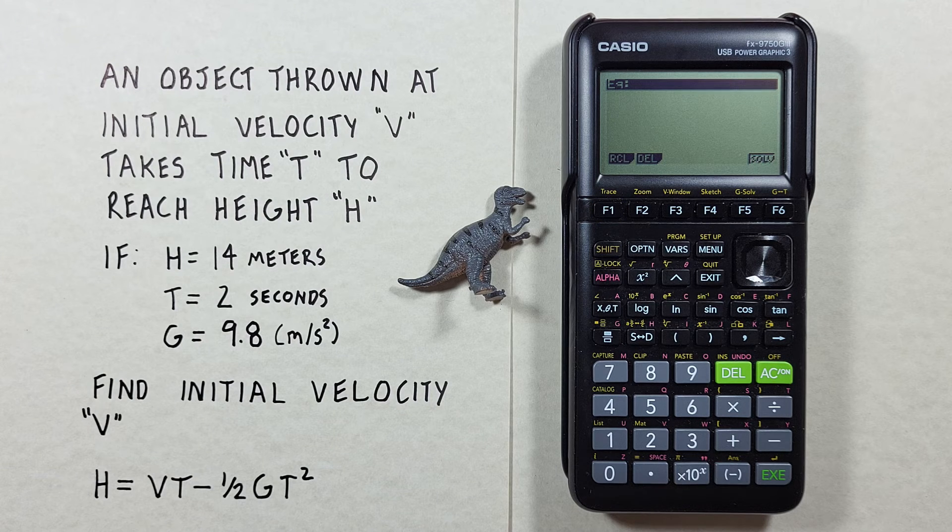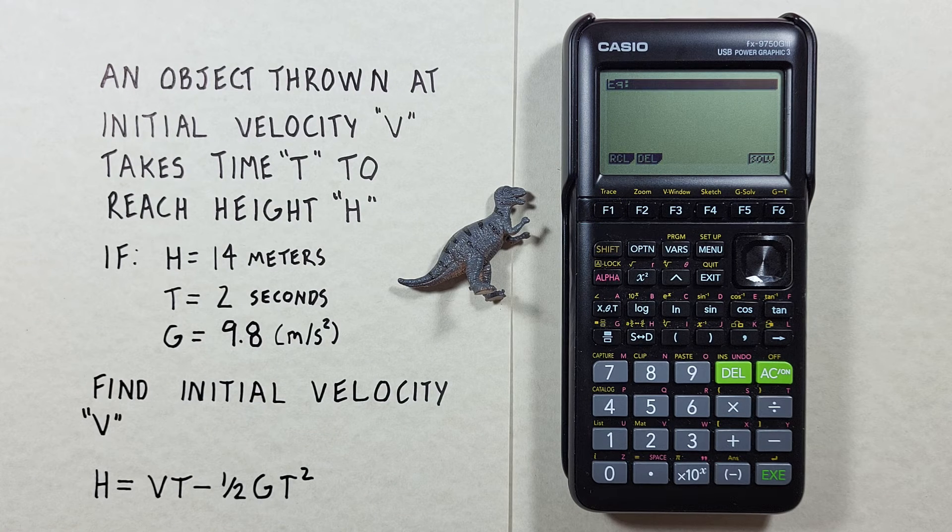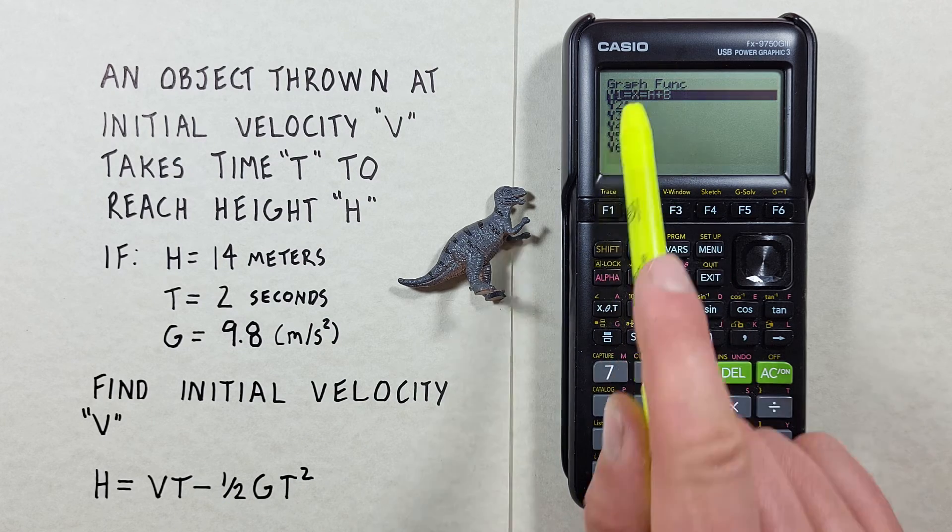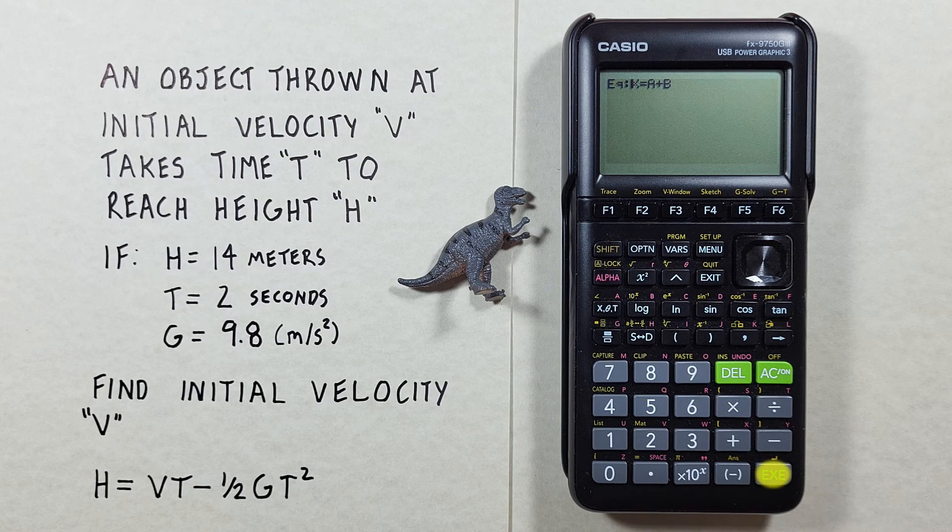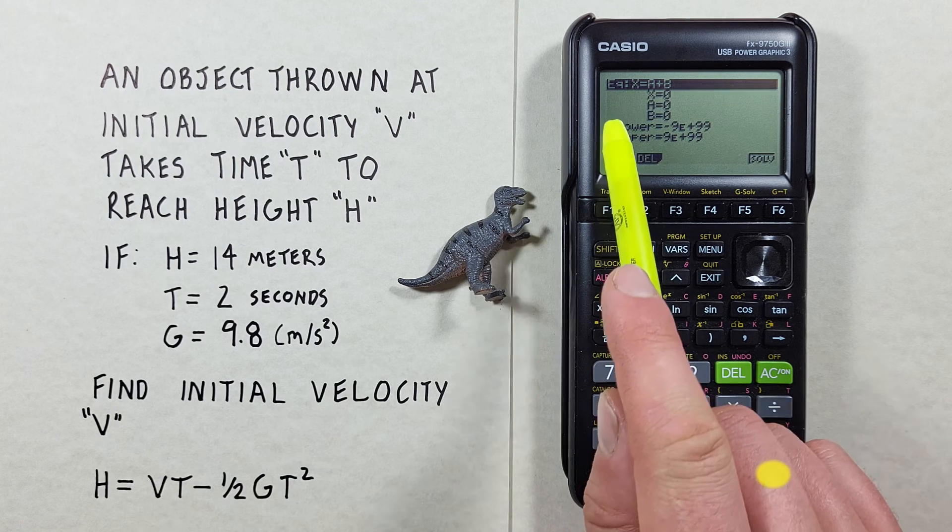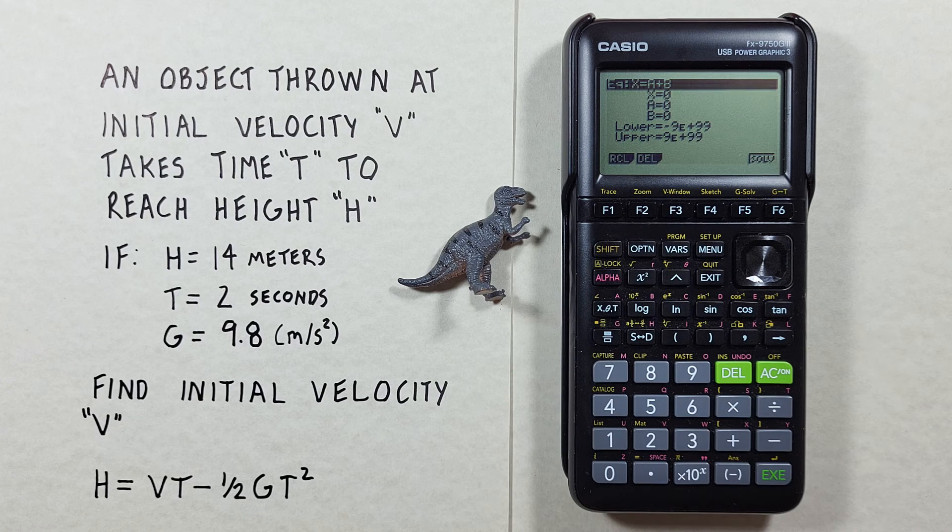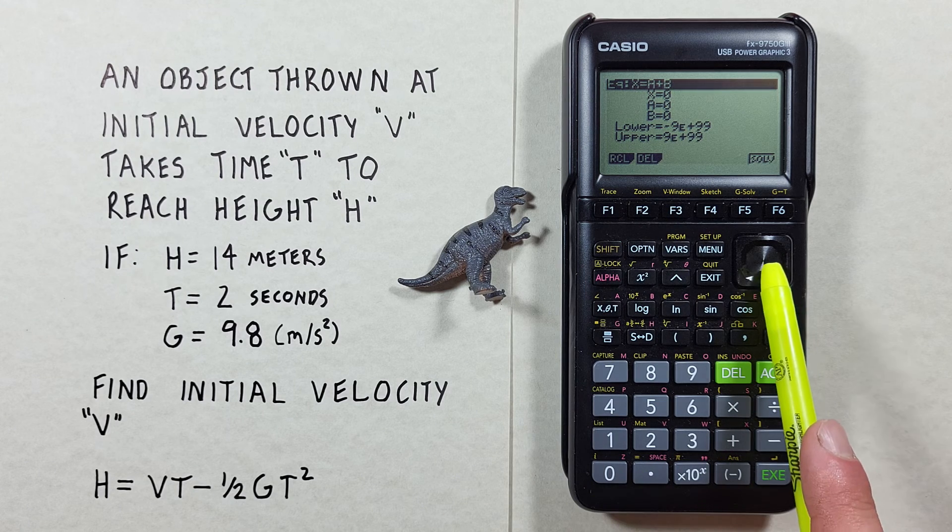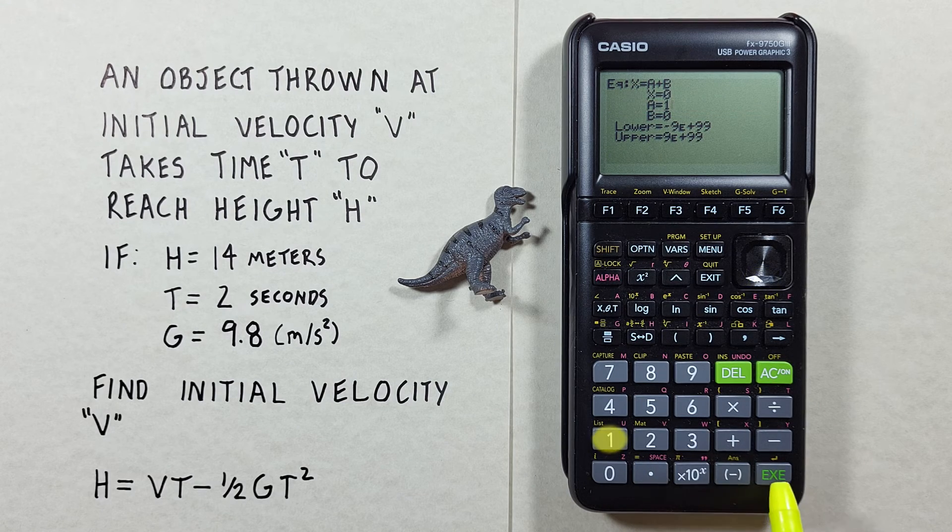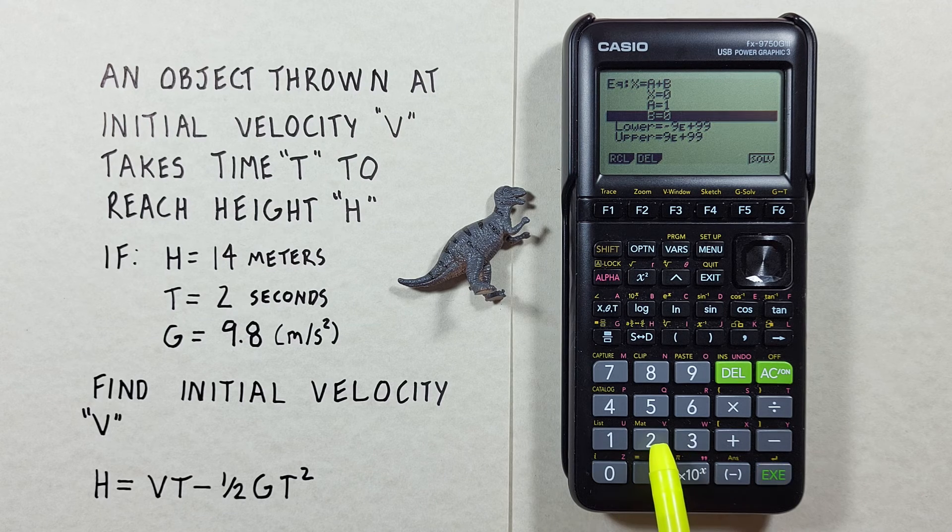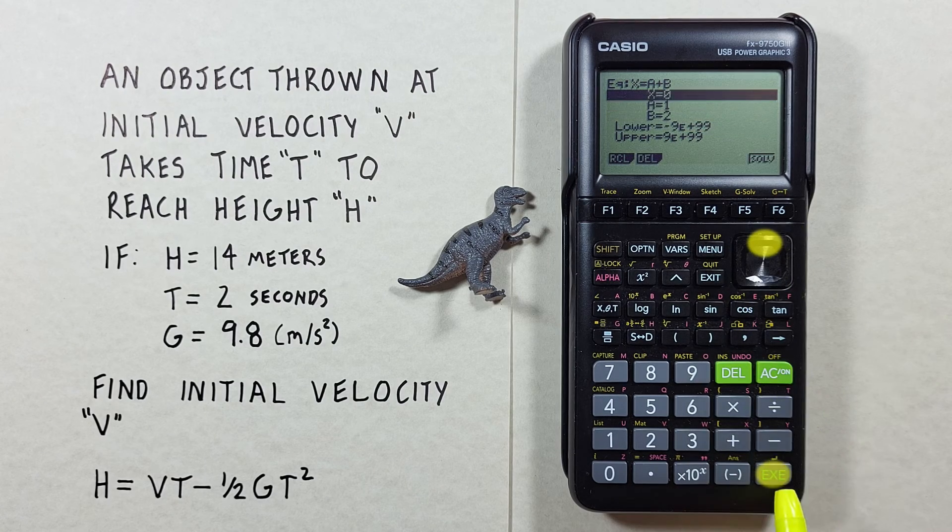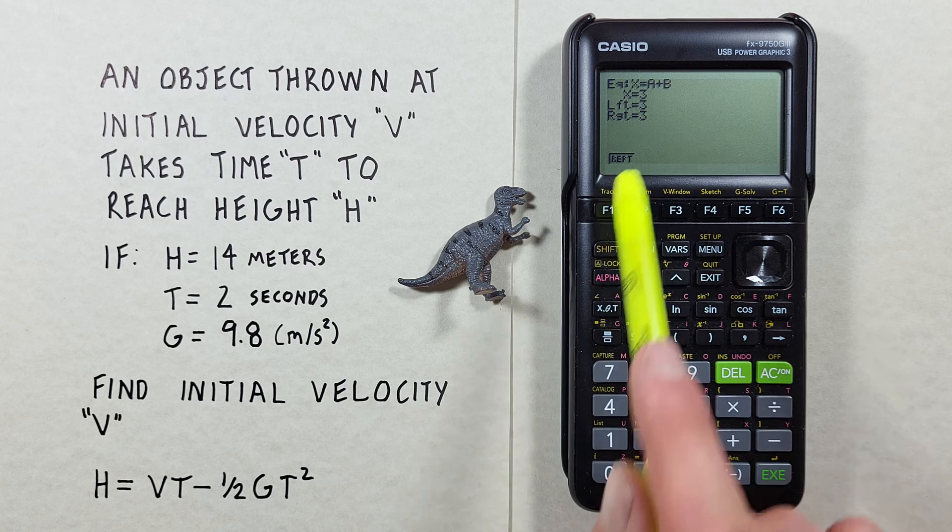And here we can recall that formula that we've saved in our graphing menu. To do that, we hit the F1 and there's our formula. So we just select it, it brings it into our equation, and we hit EXE again. There we go, x equals a plus b. And we can just solve for that. Let's say our a is equal to one and our b is equal to two. If we solve for x, we see x equals three, which is correct.